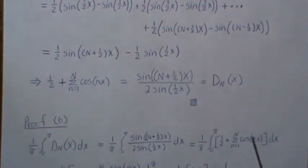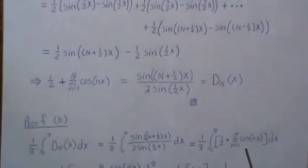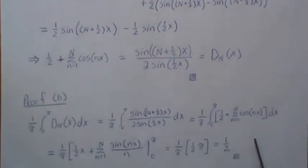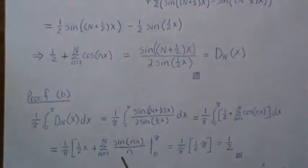The anti-derivative of one-half is going to be one-half x. The anti-derivative of each one of these terms is going to be sine over n, and that's what we get here. We're integrating from zero to π, so you stick in π and you stick in zero. These are all zero, but then when you stick in π here, you get one-half π, and with the original divide by one-half, you get one-half.